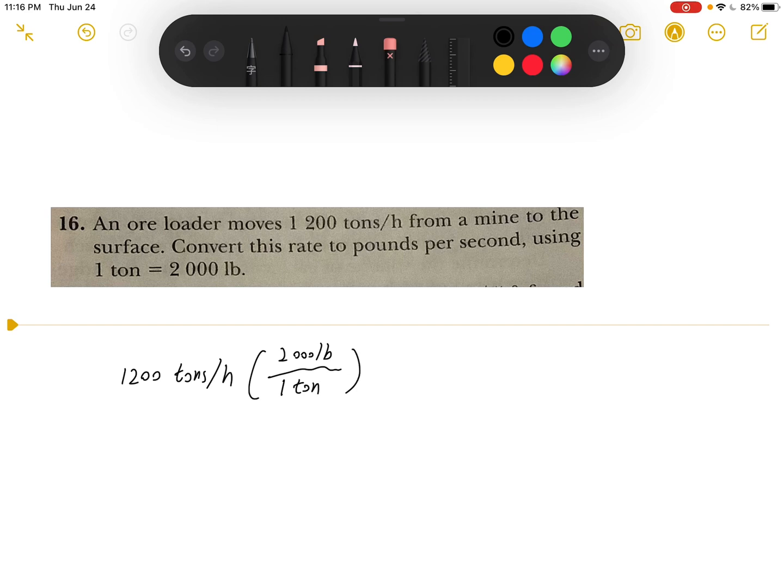1 hour equals 60 minutes, so we're going to multiply by 1 hour over 60 minutes. And 1 minute equals 60 seconds, so we're going to multiply by 1 minute over 60 seconds.